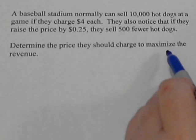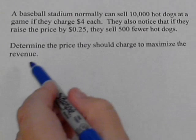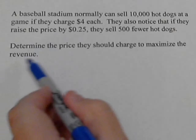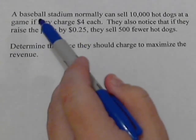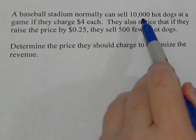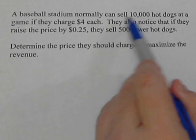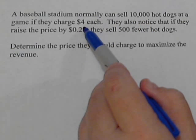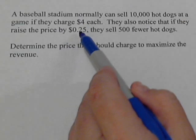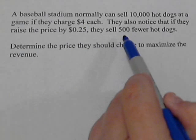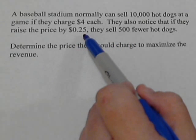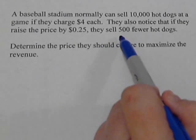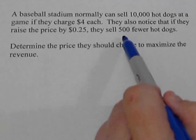We're going to do a maximizing the revenue problem. Revenue is how much money we bring in. So a baseball stadium has collected some information. They say normally they can sell 10,000 hot dogs if they charge $4 each. They also realize that if they raise the price, the amount of hot dogs they sell is going to go down. Based on their numbers, every time they raise it by 25 cents, they're going to sell 500 less.